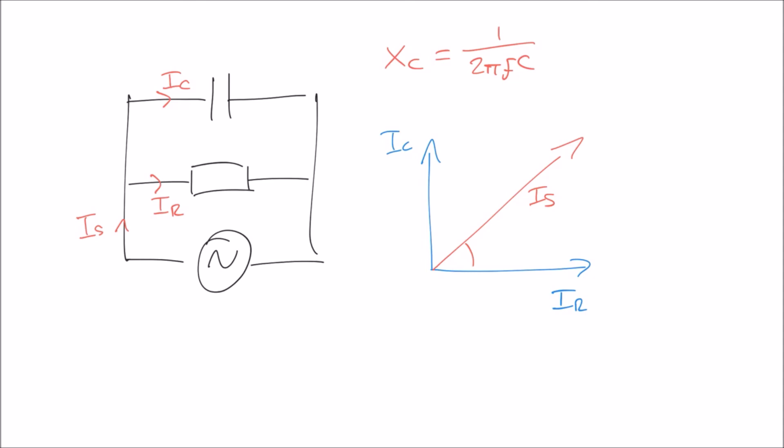So I hope this video has been useful in explaining how resistors, inductors, and capacitors behave when they're combined together in parallel. In this video, we've only looked at two components in parallel, either resistor and inductor, or resistor and capacitor. In the next video, we're going to be looking at how all three components behave when they're combined in parallel.